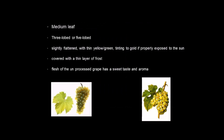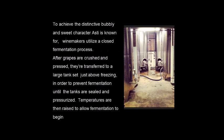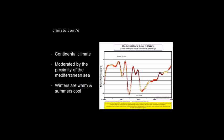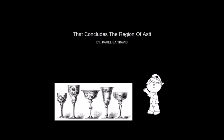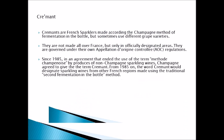Varietals of Rioja — red: Tempranillo 60–75% for flavors and aging potential; Garnacha 15–20% for body and alcohol; Graciano 5–10% for aroma; Mazuelo 5–10% for flavors and herbal seasoning. For white: Viura 90% for acid and aroma; Malvasia 5–10% for aroma; Garnacha Blanca 5–10% for body. Also Cabernet Sauvignon, Cinsaut, Chardonnay, and Monastrell. Viura is also known as Macabeo.